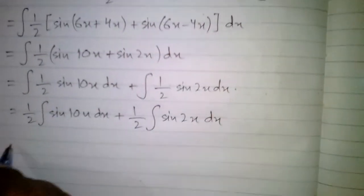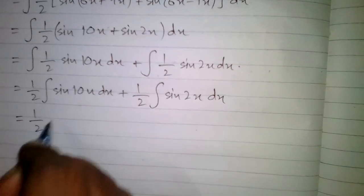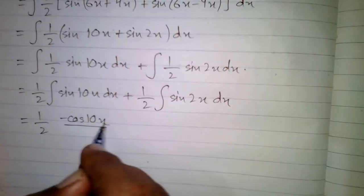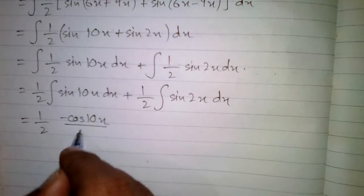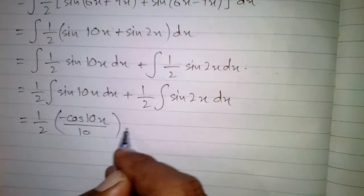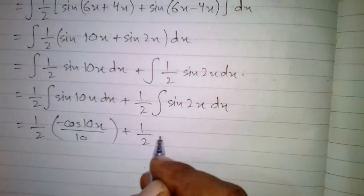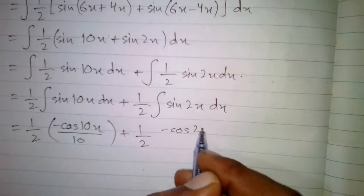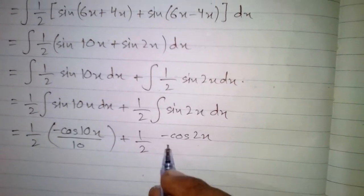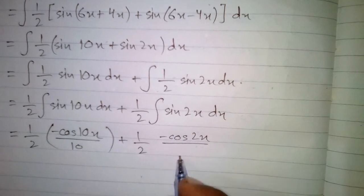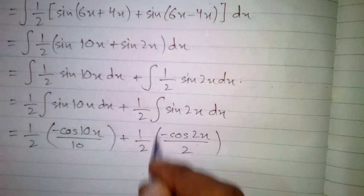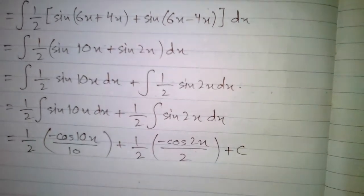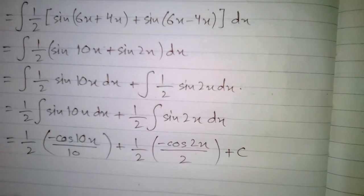The integral of sin 10x is minus cos 10x divided by the derivative of 10x, which is 10. The integral of sin 2x is minus cos 2x divided by the derivative of 2x, which is 2. Plus the constant of integration c.